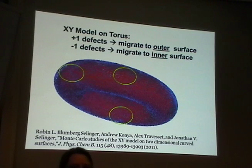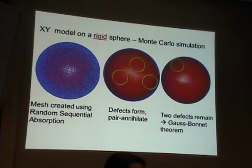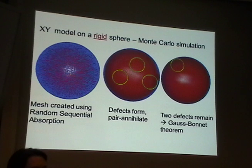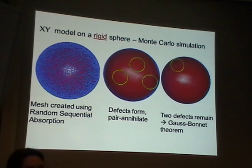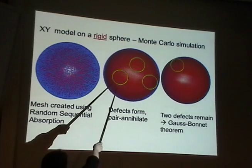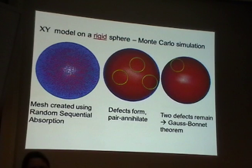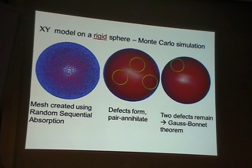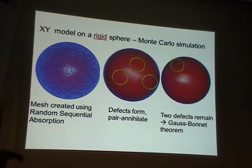Just because the total topological charge is 2 on the sphere doesn't mean you can only have 2 defects. You can have as many plus-minus pairs as you want and still satisfy the Gauss-Bonnet theorem — it only tells you the total charge, not exactly how many defects there are.